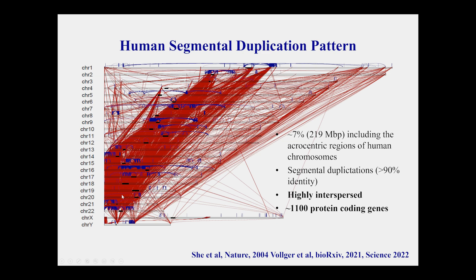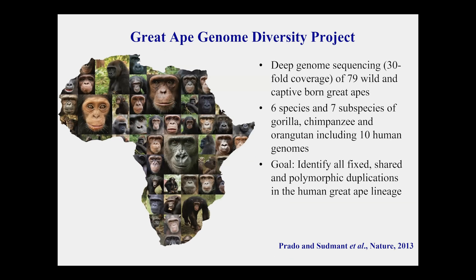The short arms of human chromosomes are loaded: more than 50% of their mass is made up of duplicated sequences. These duplications have evolved over the last 40 million years of primate evolution, and about 1,100 protein-coding genes out of the 20,000 in our genome map to these regions — and those are the ones we're specifically interested in. About ten years ago, a former postdoc of mine, Thomas Marquez, and I began a project to understand genetic diversity in other species, sampling the genomes of 79 wild and captive-born great apes from chimps, bonobos, gorillas, and orangutans, including subspecies.